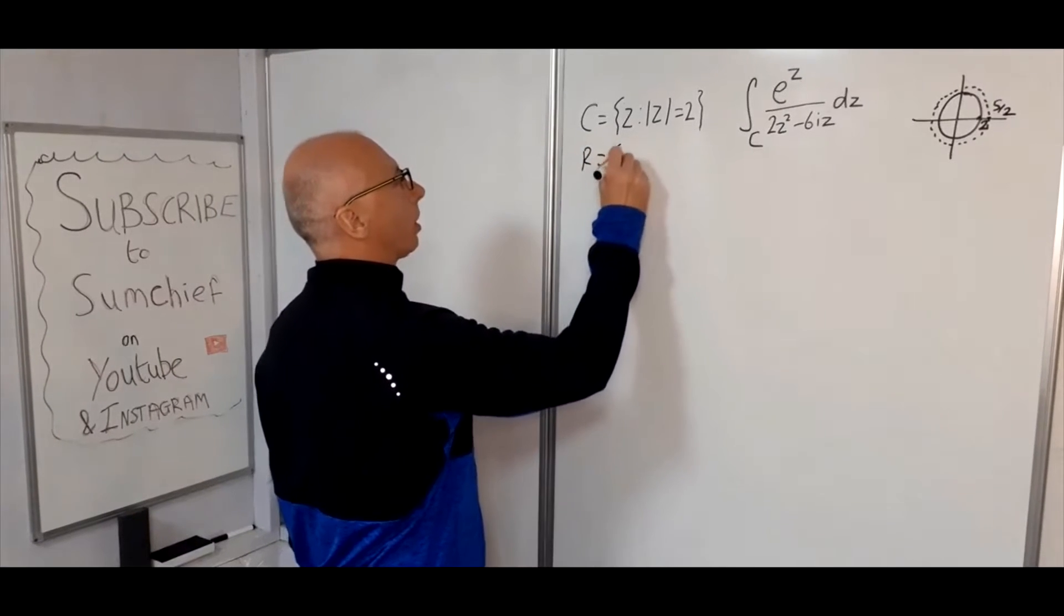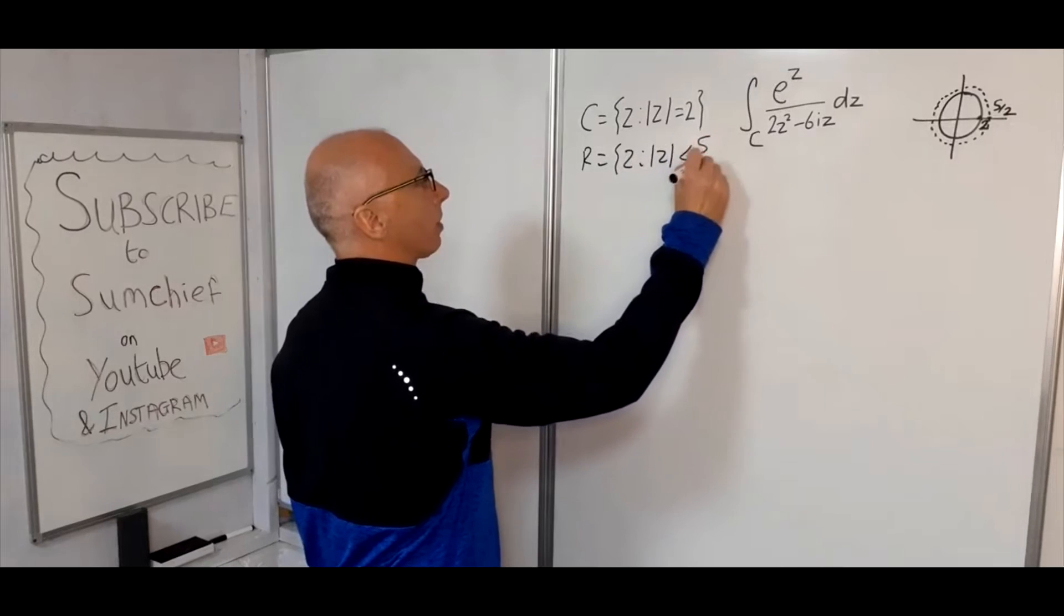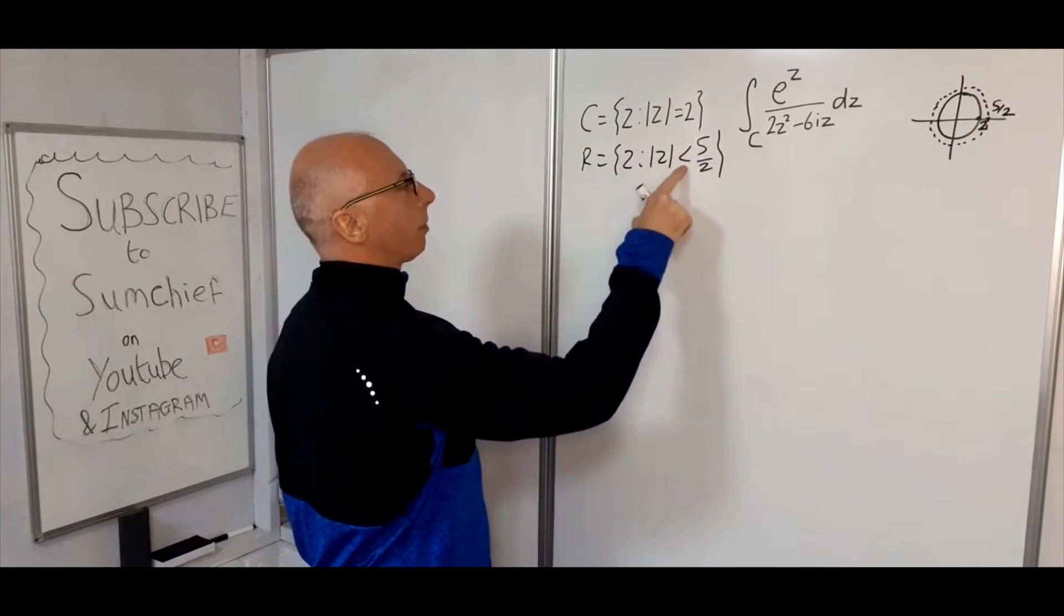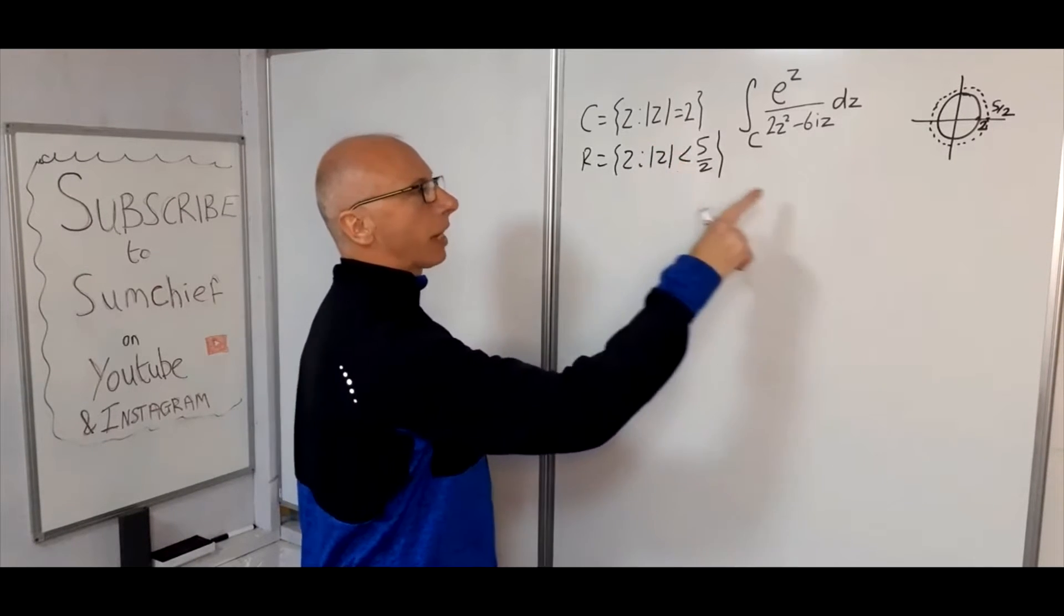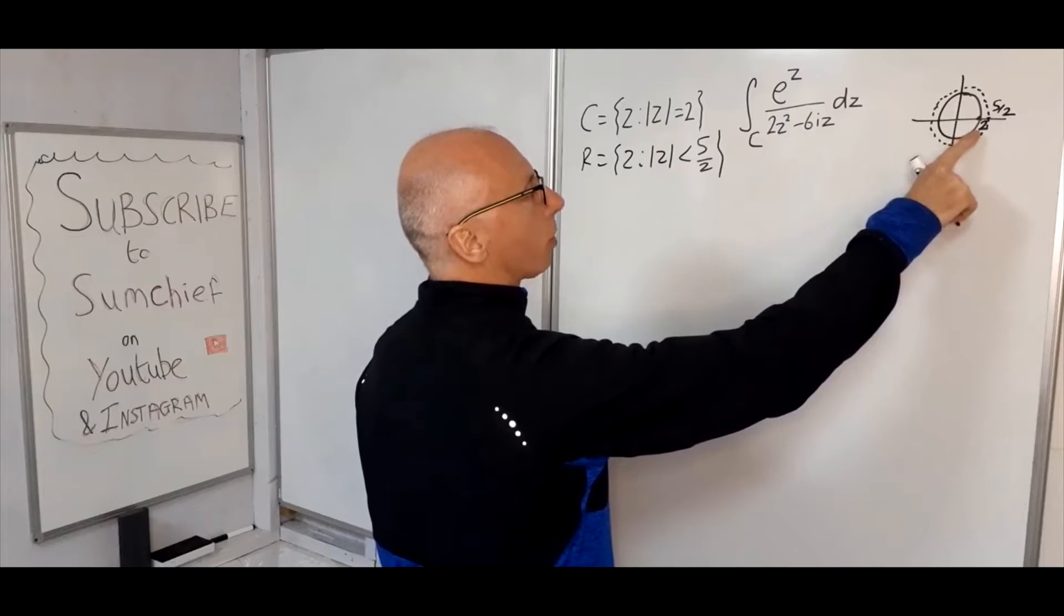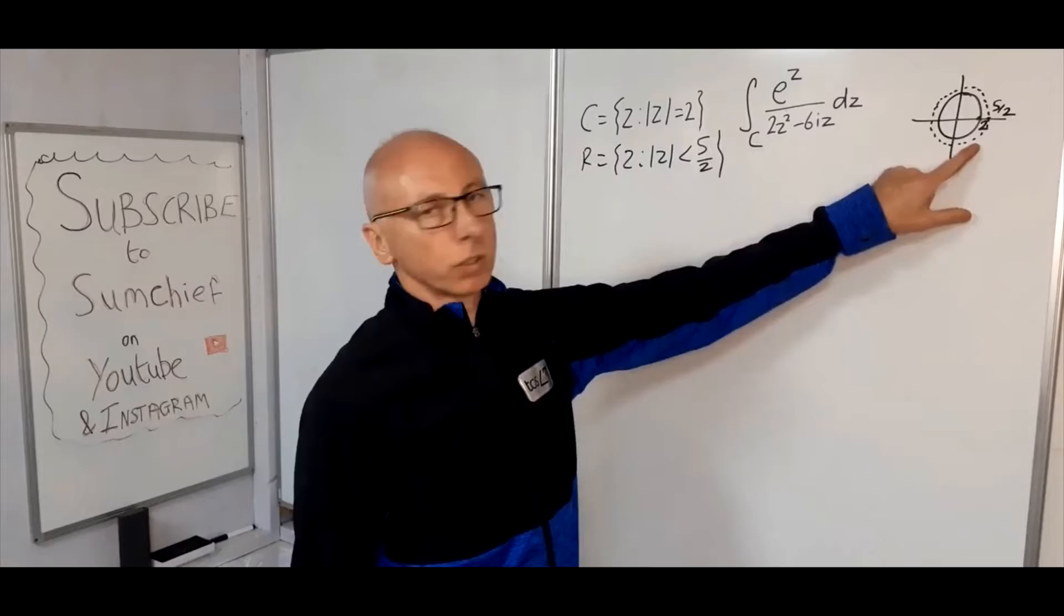So we'll say the region z, modulus z is less than 5 over 2. Obviously the equals and the less than for the inequality defines us with the closed and the open, closed contour, the open closed region, the simple closed contour.